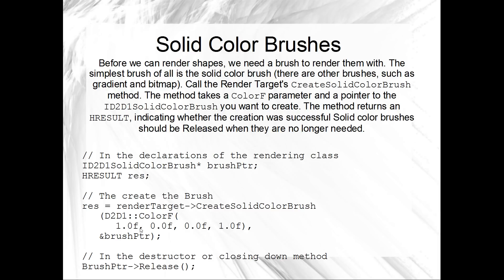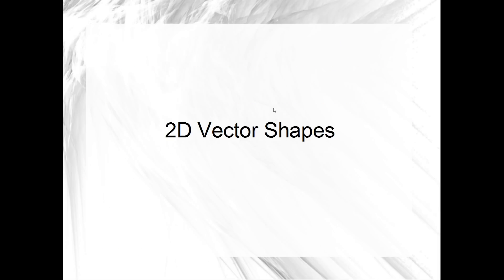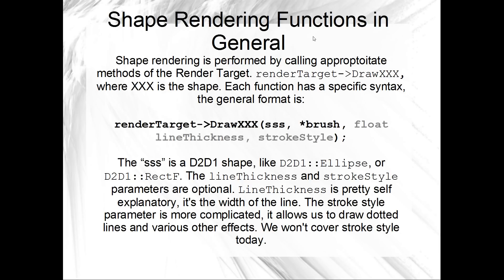Once you've got a Solid Color Brush, you can draw 2D vector shapes with it. Shape rendering functions in Direct2D generally follow the same format: RenderTarget.DrawSomething — where XXX is some shape. You pass the shape as a parameter, something like D2D1_ELLIPSE or RectF depending on what you're drawing, then a pointer to your brush specifying the drawing color. There are also two optional parameters: line thickness, which is the width of the line, and stroke style, which allows effects like dotted or dashed lines. Today we're just looking at creating shapes with brushes, so we won't worry about those.